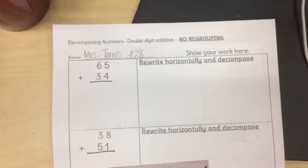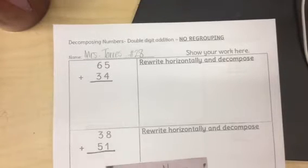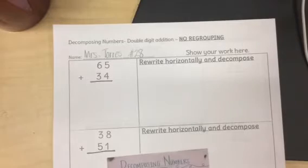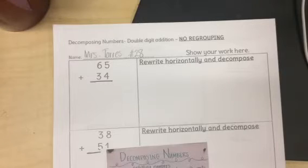Today we're going to be talking about double digit addition with no regrouping, and one strategy that we will learn this week is called decomposing numbers. When we are decomposing numbers, we're breaking a number down into its parts, just like expanded form.